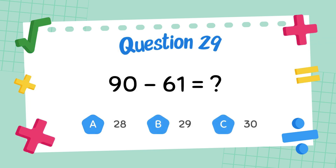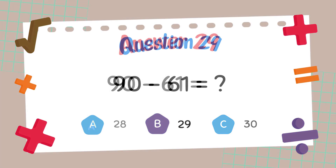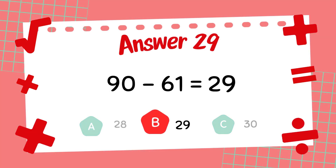What is ninety minus sixty-one? The answer is twenty-nine.